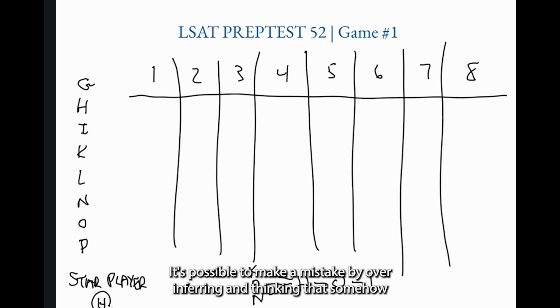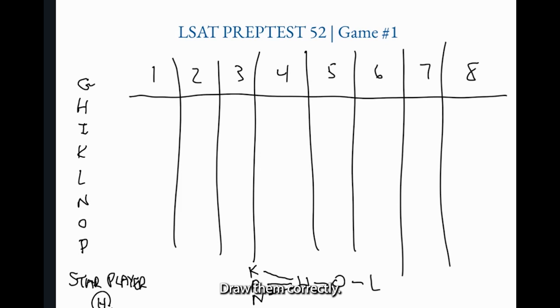It's possible to make a mistake by over inferring and thinking that somehow because something is maybe spatially to the left on your scratch work page, then it must actually be to the left. We'll see a clearer example of this in a moment. But the key point is, make a note, always follow just the lines. Draw them correctly, they will not let you down. Now what about the last two rules that don't mention H? At this point, if you've created this much of a web, it's highly likely that the other rules will mention a player already present and therefore you can make a link with that player. The third rule tells us that we need to put L after G, G before L. So I'm just going to kind of spur G off of L like that. G before L, L after G.